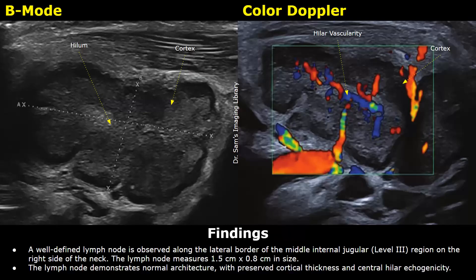These are the findings. A well-defined lymph node is observed along the lateral border of the middle internal jugular region — that is level 3 — on the right side of the neck. The lymph node measures 1.5 by 0.8 centimeters in size. The lymph node demonstrates normal architecture with preserved cortical thickness and central hilar echogenicity.